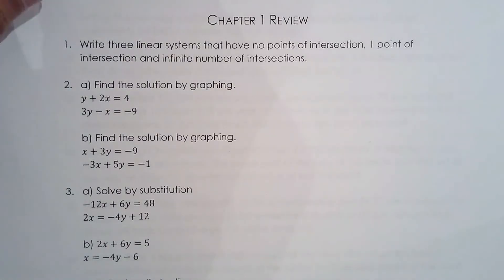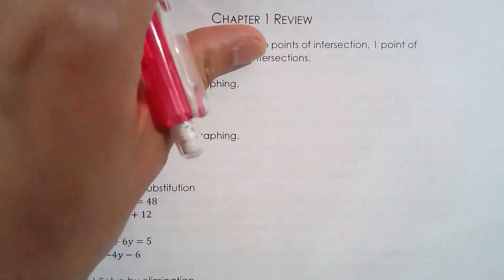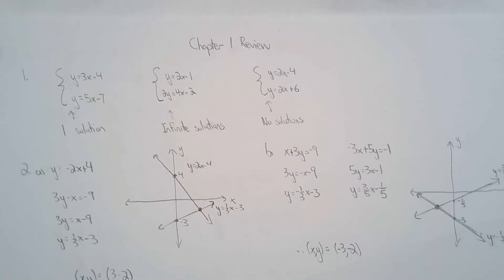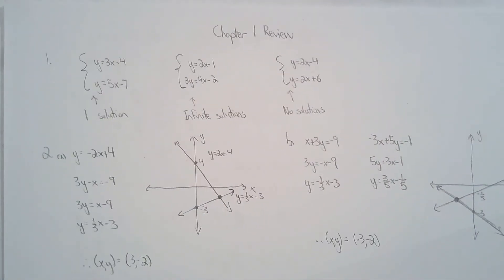In this video, we're going over the chapter 1 review homework sheet. So for the first question, it's a really nice question. You have to create your own systems which have one solution, no solutions, and infinite solutions. So of course, the likelihood of our systems being the same is very, very low.